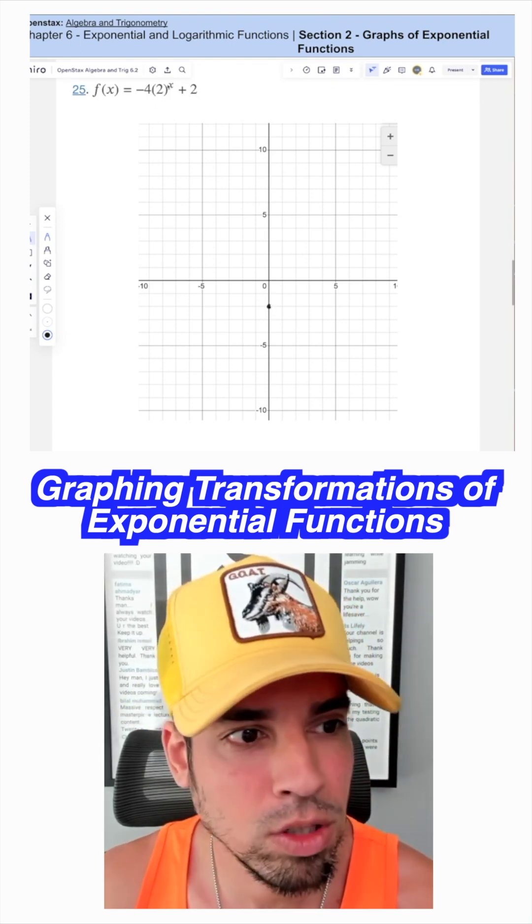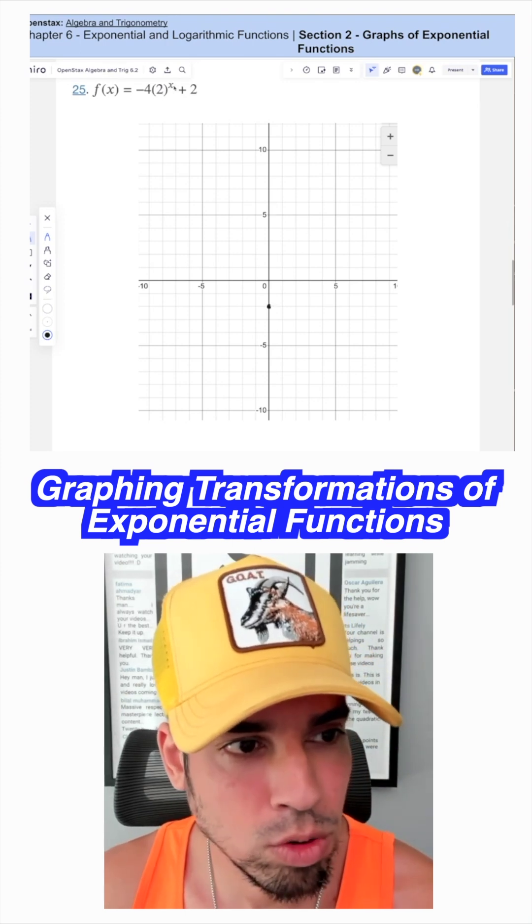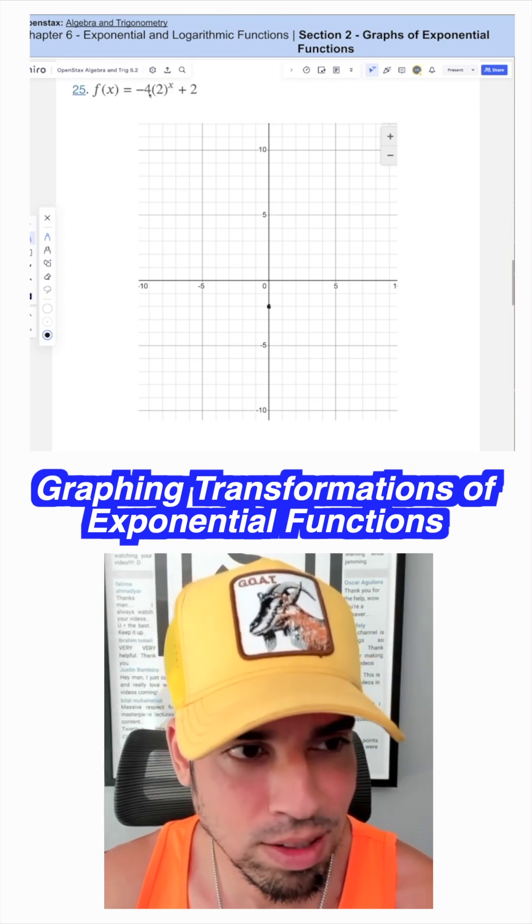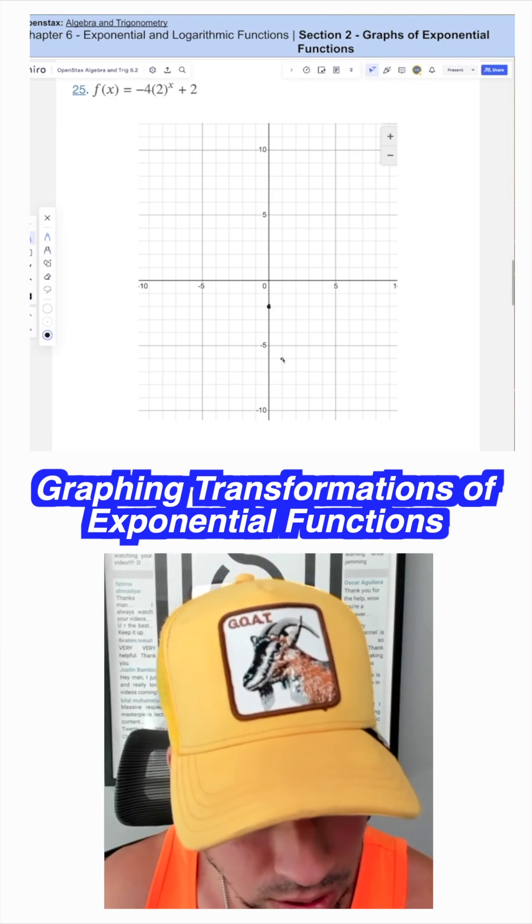Then let's plug in a couple other values. How about when x is 1, 2 to the 1 is 2 times negative 4 is negative 8 plus 2 is negative 6. So 1, negative 6.